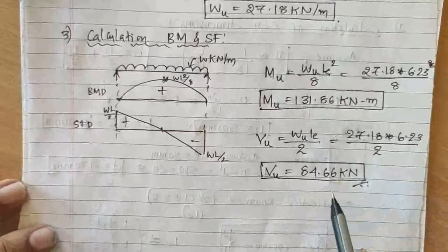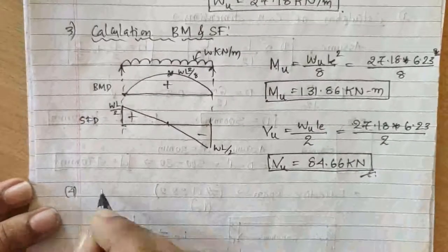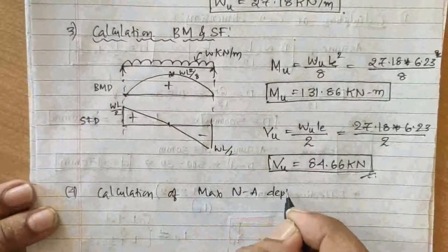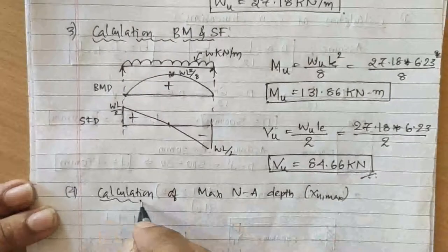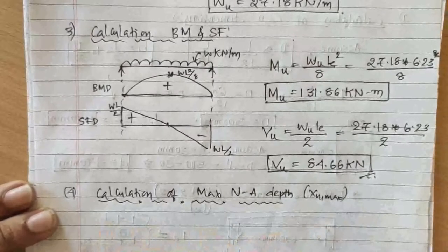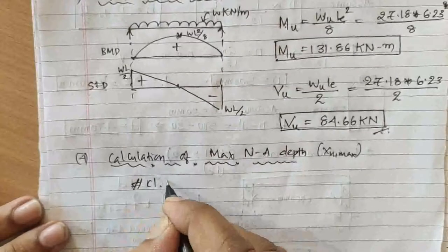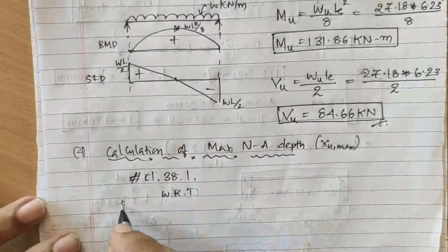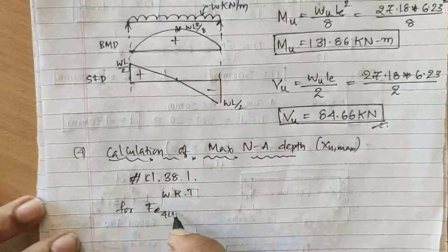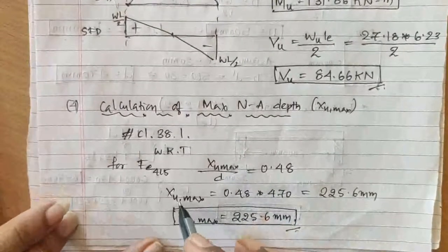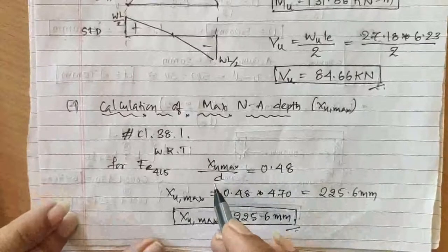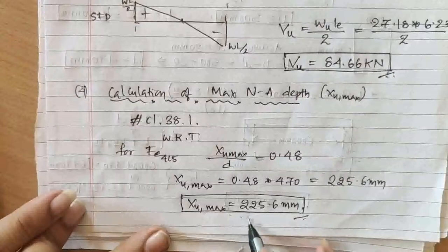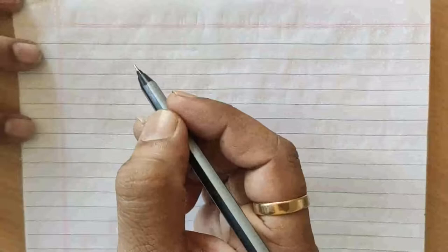The fourth step is calculation of maximum neutral axis depth xu_max. As per IS 456 clause 38.1, for Fe415 steel, xu_max/d = 0.48. Therefore, xu_max = 0.48 × 470 = 225.6 mm.